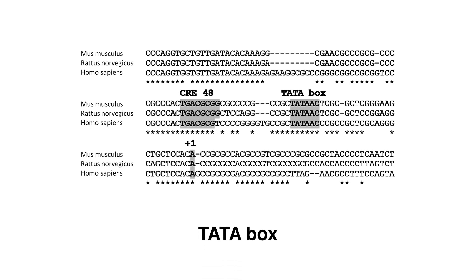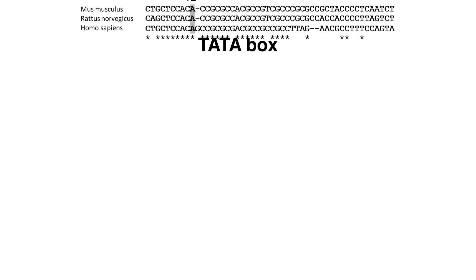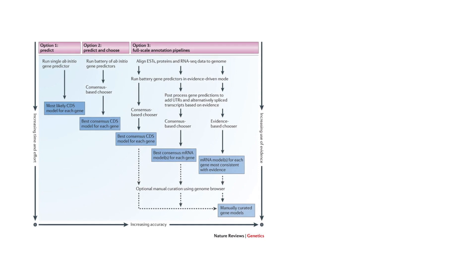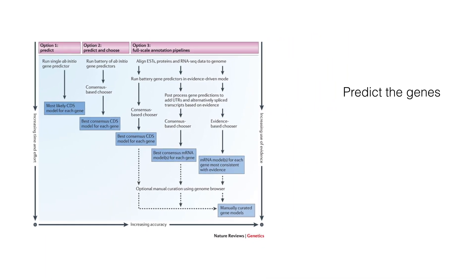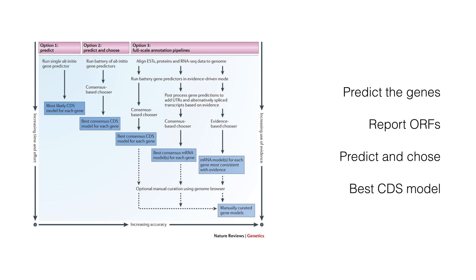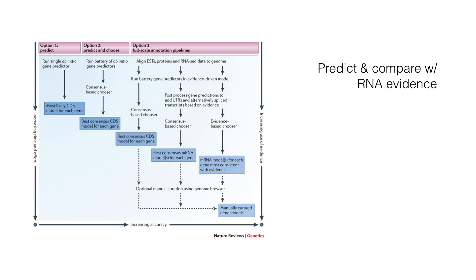Conservation across species is a good signature of an important functional element. Many genome projects end in computational annotation only. But a good approach would be to find RNA evidence. Depending on the time and effort the research team can invest, three study scenarios are possible: first, to predict genes using a single predictor and report the ORFs; second, to predict and choose — run a battery of predictors and choose the best coding sequences; and finally, predict and compare with RNA evidence — run a battery of gene predictors and compare them with mRNA evidence, which is now recommended.